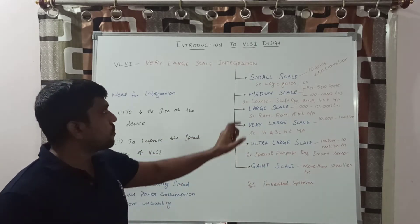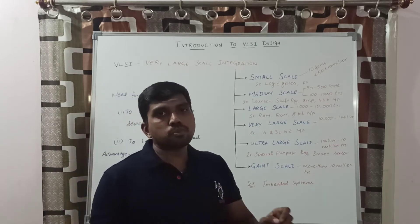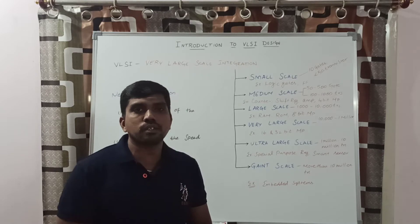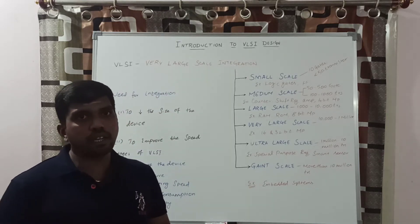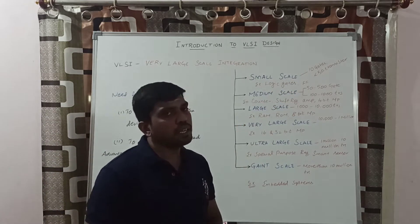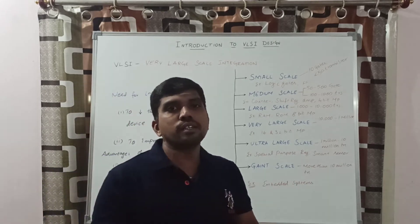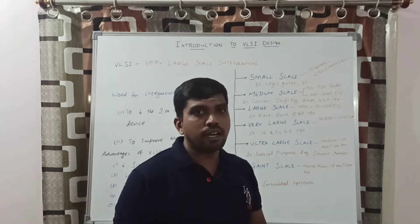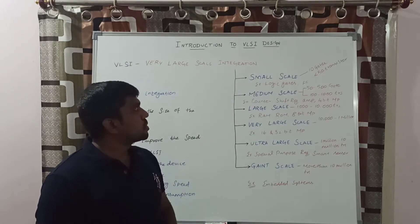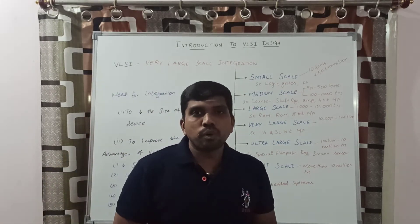The first one is Small Scale Integration (SSI). In SSI circuits we have a limited number of transistors and logic gates — only up to 50 transistors and 10 logic gates are used in a single IC.